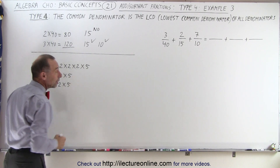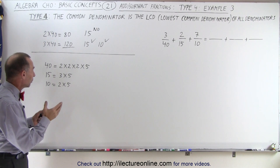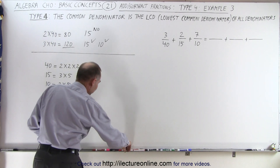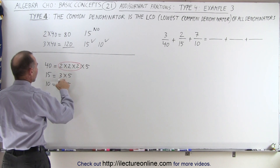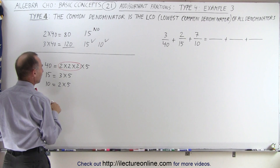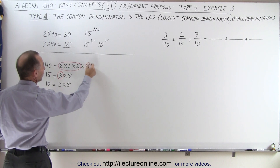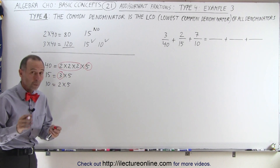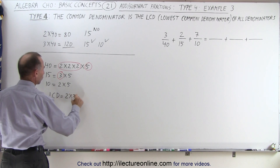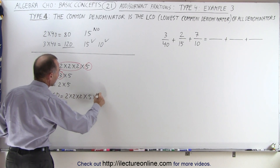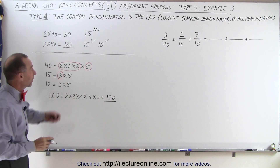Notice the factor 5 appears in each of the three numbers, but we only have to count it once. That's the beauty of the LCD — the lowest common denominator — we only have to take each factor once, even though 5 appears three times across all three numbers. The factor 2 appears three times in 40, zero times in 15, and once in 10, so we take 2 three times. The factor 3 appears once in 15 and nowhere else, so we must include it. The factor 5 appears once in each, but we only account for it one time. So the LCD equals 2 times 2 times 2 times 5 times 3, which is 120 — the same answer we found using the first method.